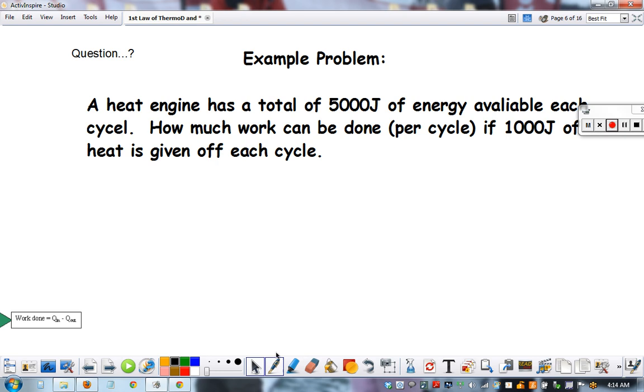Heat engine has a total available energy. So see if you can match up the numbers underneath the formula. Here's how you solve it. How much work can be done? This is our question. 1,000 joules of heat is given off. That tells us 1,000.